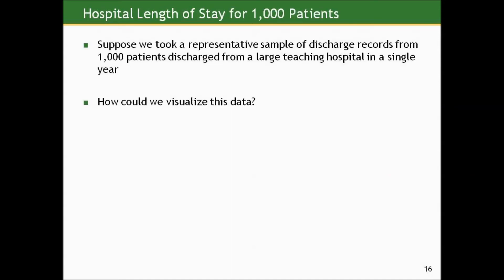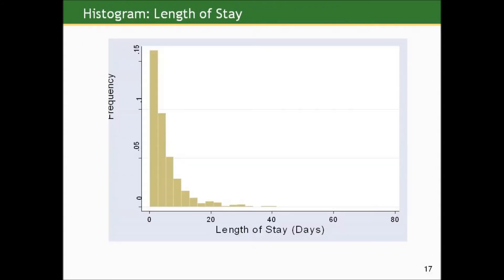Let's look at a different data set and see what we get with histograms and box plots. Suppose we took a representative sample of discharge records from 1,000 patients from a large teaching hospital in a single year, and we were interested in their length of stay. Here's one approach: a histogram. So far we've been spoiled — every histogram we've looked at has been symmetric. Here, that's not the case. We have something characterized as right skewed — the majority of observations are lesser in value with a few extremes that are greater.